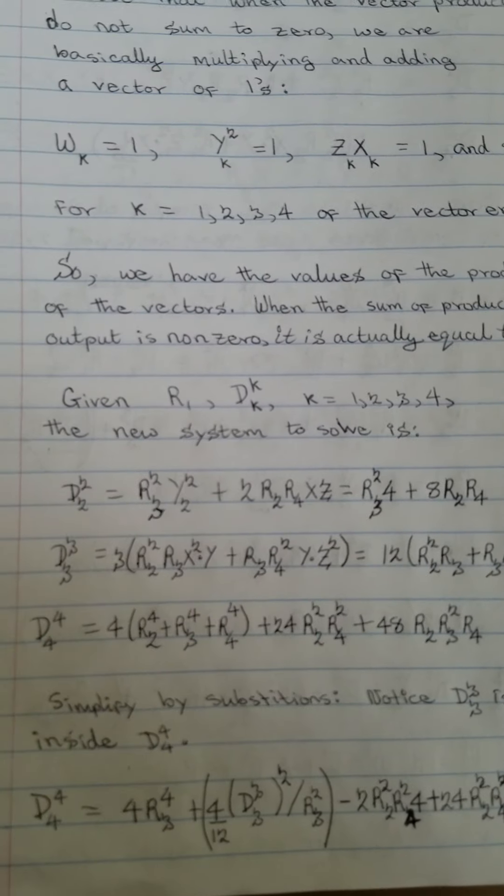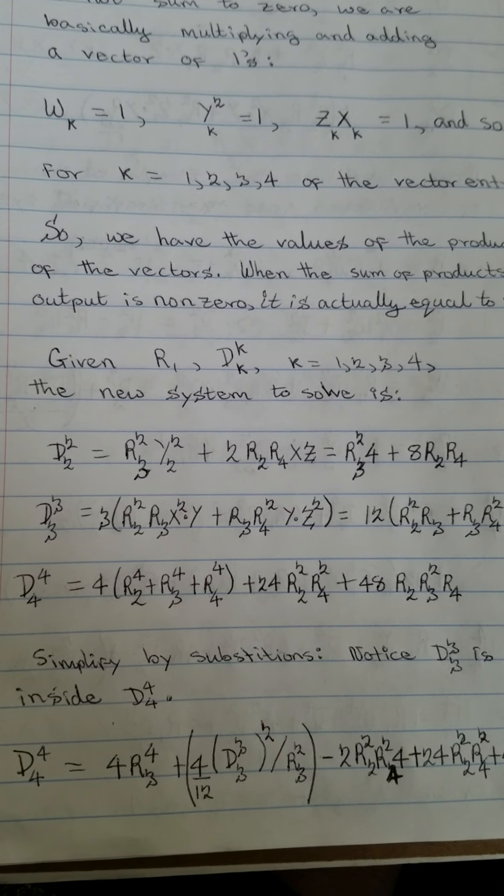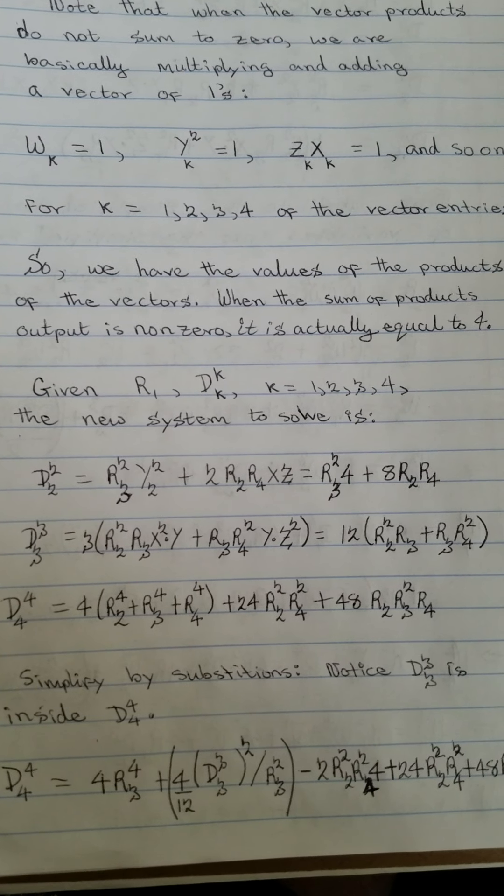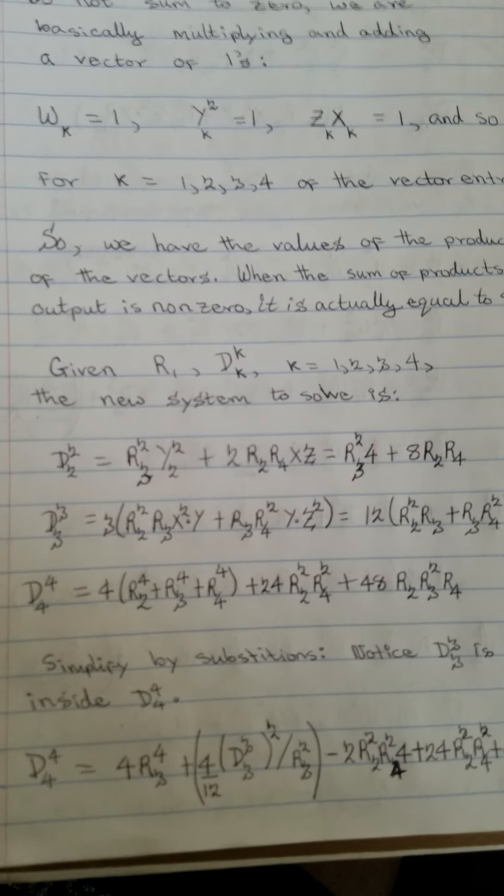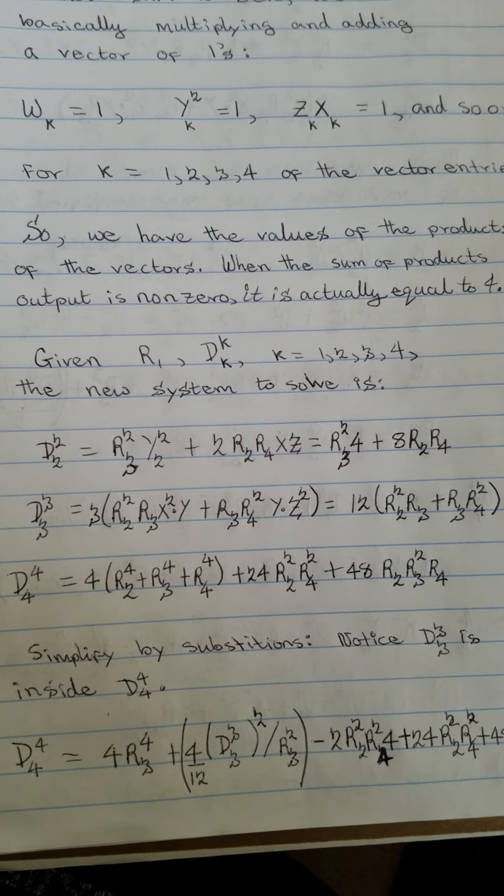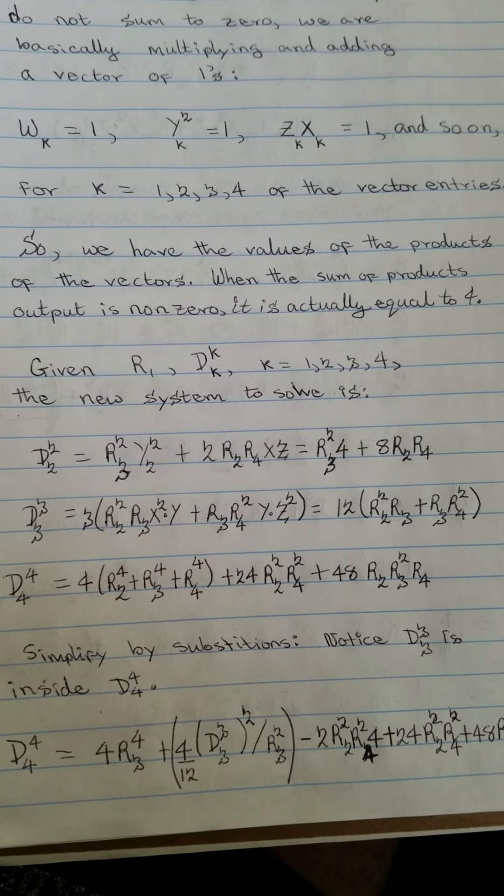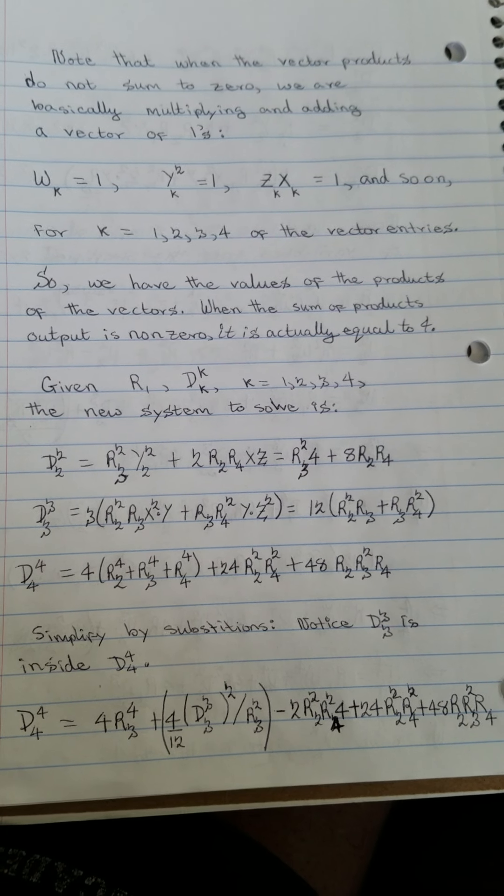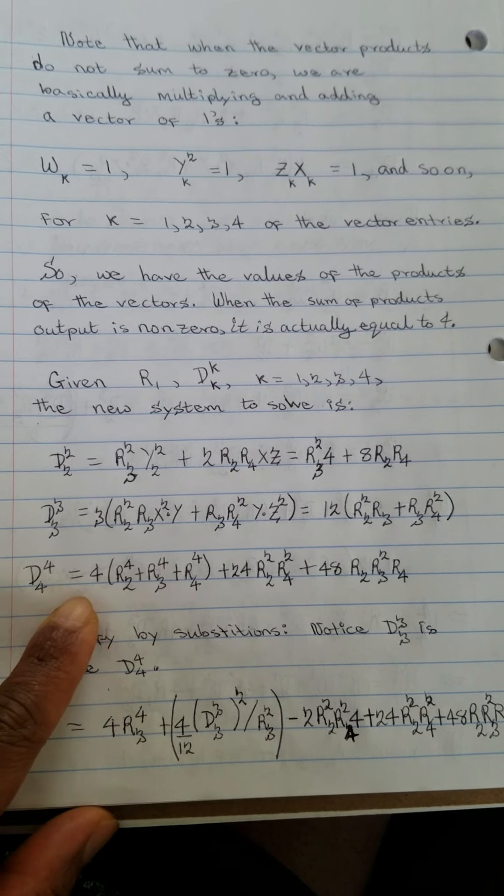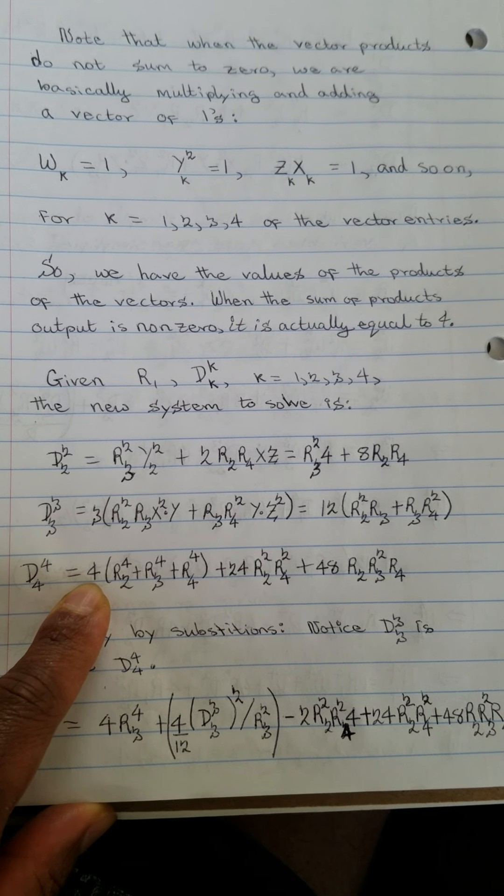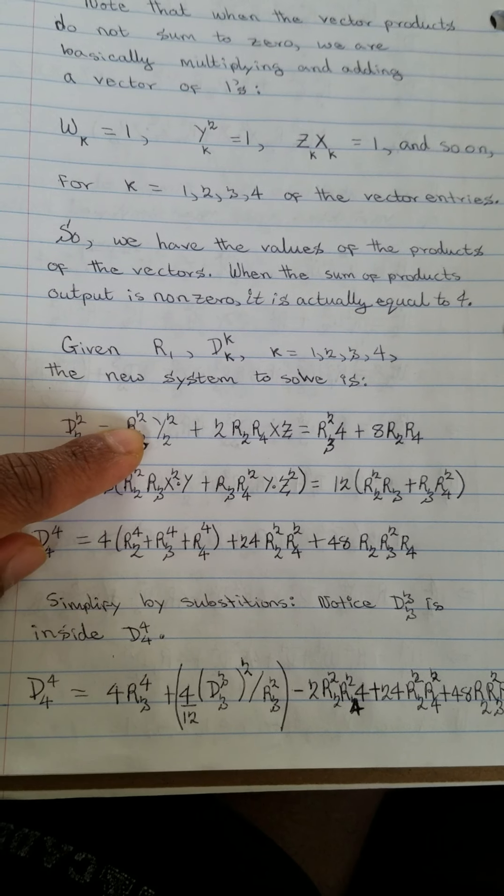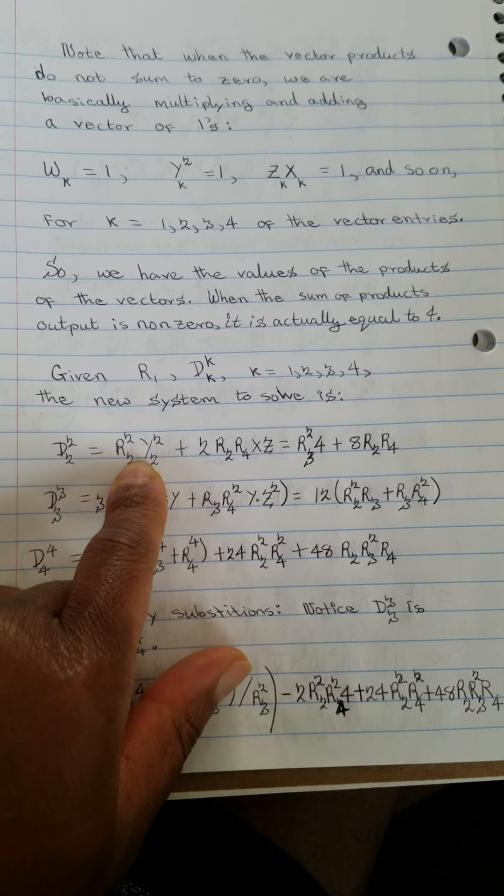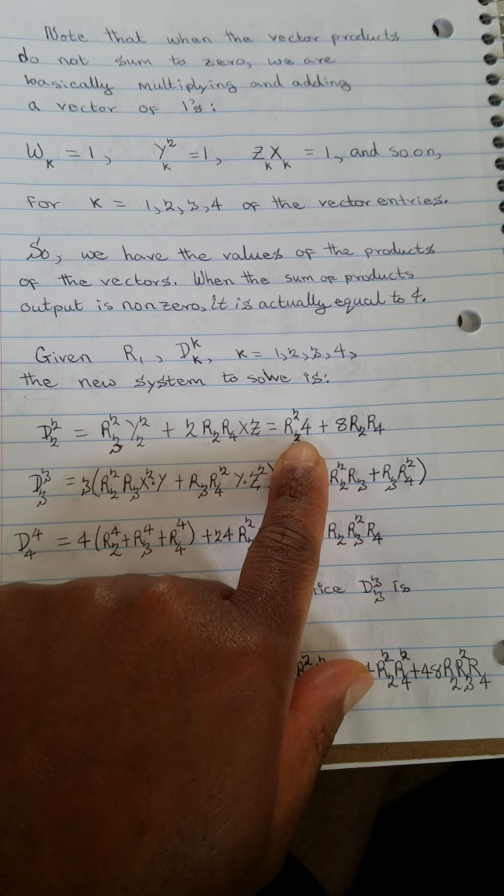So when you sum those vectors, each one of them will sum to either 0 or to 4, depending on whether the entries multiplied up to 1 or not. So that's how the 4 appears here. This will be replaced with 4 here because the sum of 1 four times is 4 and so on.